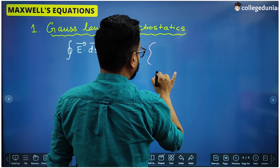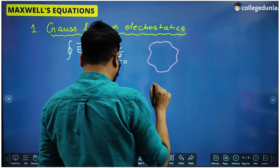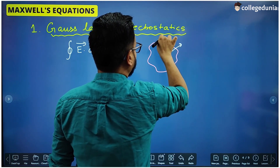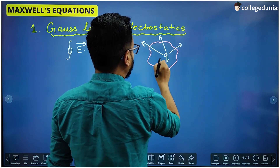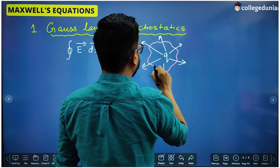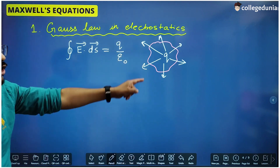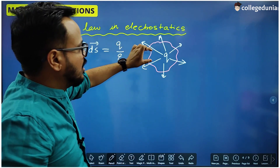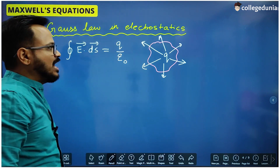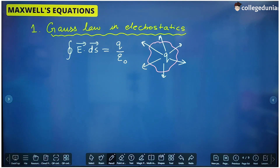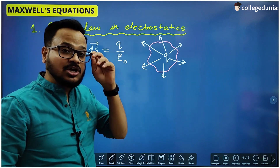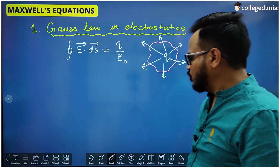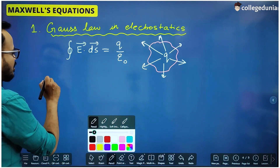For example, if this is a closed surface and this closed surface contains a charge Q, then the total electric flux — that is the total number of electric field lines coming out of the surface — if you want to calculate the total flux through this surface, you just divide Q by the value of epsilon-0. If you want to see this in detail you can refer to the lecture of Gauss law on this channel. So this was the first Maxwell equation.